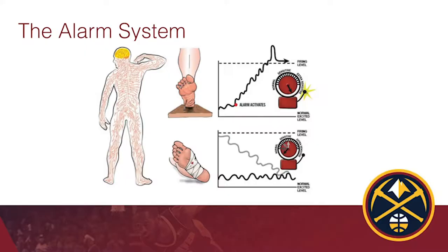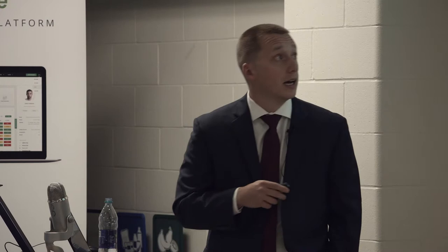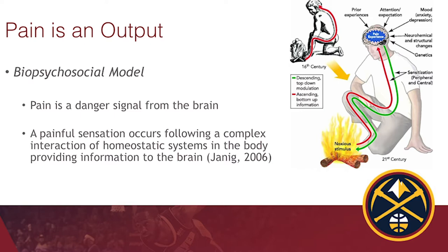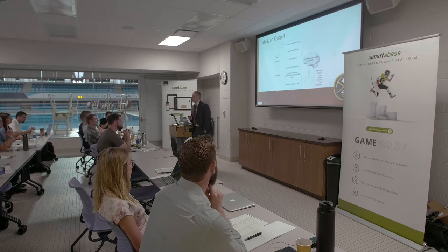We've learned now that the nervous system works much more closely to an alarm system. When you stick your foot in fire, step on a nail, or turn your ankle, multiple nerve signals travel up to your brain and then pain turns into an output. There are ascending pathways regarding pain and descending pathways. A painful sensation occurs following a complex interaction of homeostatic systems in the body providing information to the brain — simply, there's a lot going on before pain is given as an output.